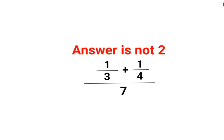Welcome everyone. Today we are going to understand why the answer for this question is not supposed to be 2. We have 1 upon 3 plus 1 upon 4 upon 7.